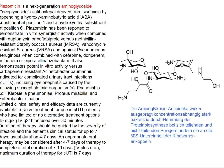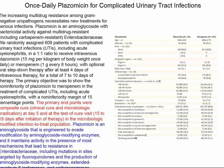The next topic concerns a new aminoglycoside called plazomicin. Its structure shows the typical aminoglycoside pattern — three sugars connected together and three free amino groups, similar to gentamicin. Aminoglycoside antibiotics operate by inhibiting the 30S ribosomal fraction in bacteria. They are very effective against gram-negative bacteria, and the problems with these drugs concern nephrotoxicity and ototoxicity.